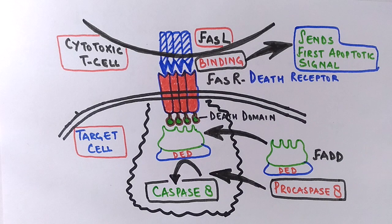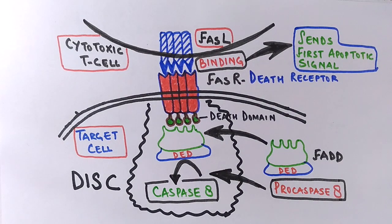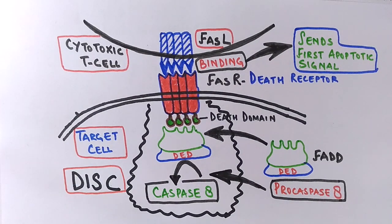These all form a single complex molecule called DISC, that's death inducing signaling complex. From here the cascade for apoptosis starts in.